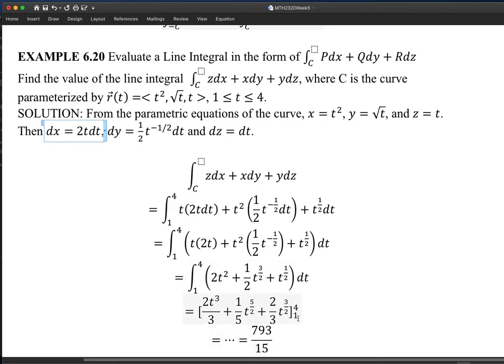And then I got the anti-derivative. Then plug in numbers. The upper bound for t is 4. The lower bound is 1. Then do a subtraction. This is example 6.20. I did take the number from the textbook directly. It turned out to be 793 over 15. This is line integral.